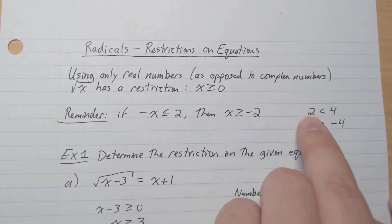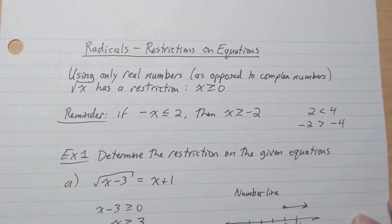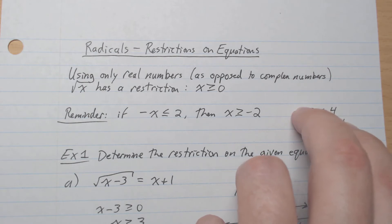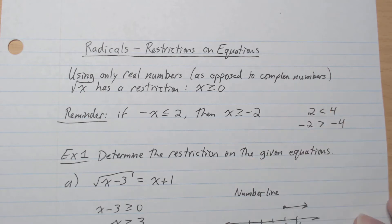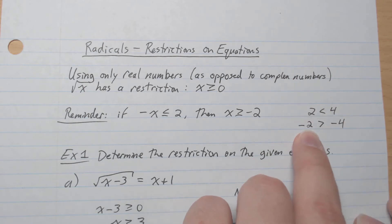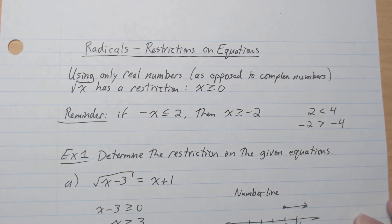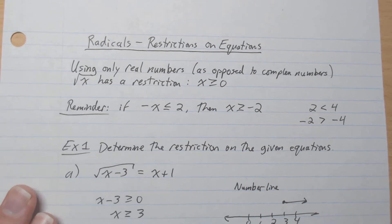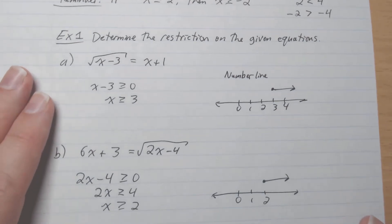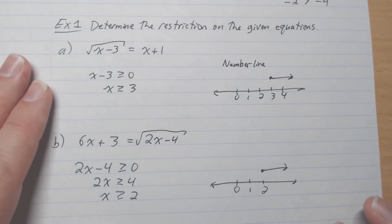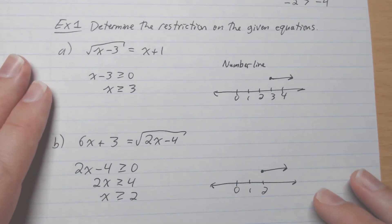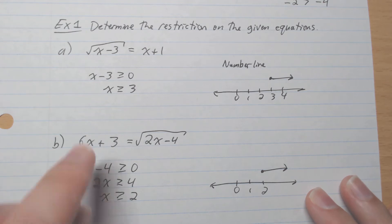For example, 2 is less than 4. Multiply both sides by negative 1, and negative 2 is bigger than negative 4, like that. Example 1: determine the restriction on the given equations.